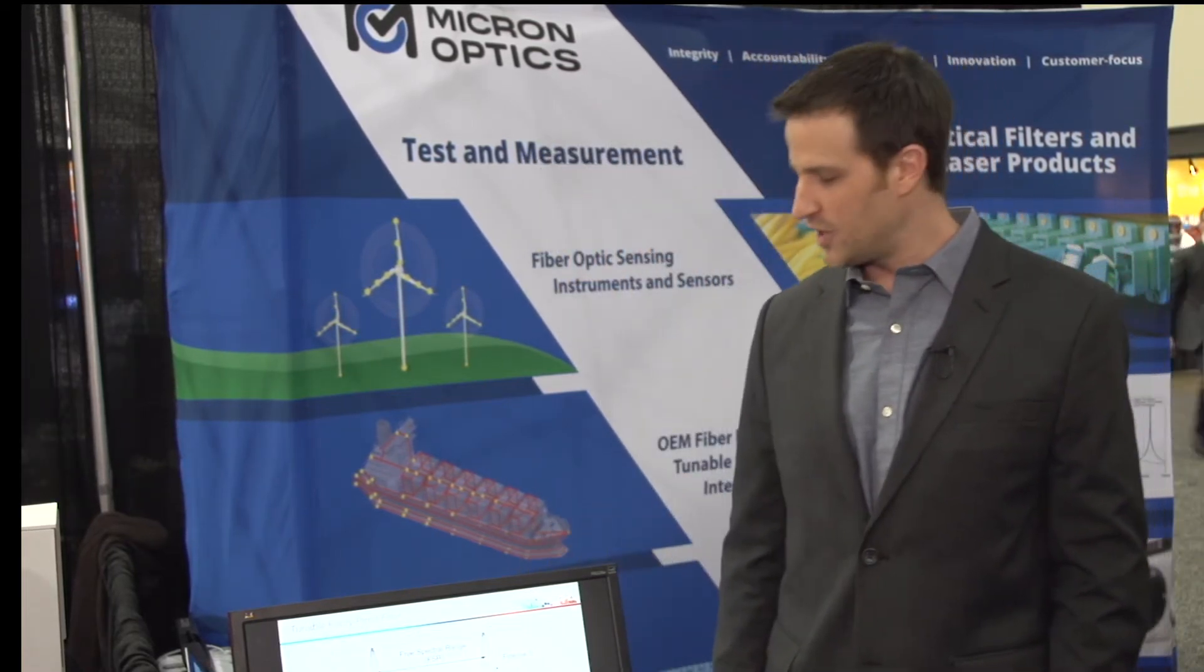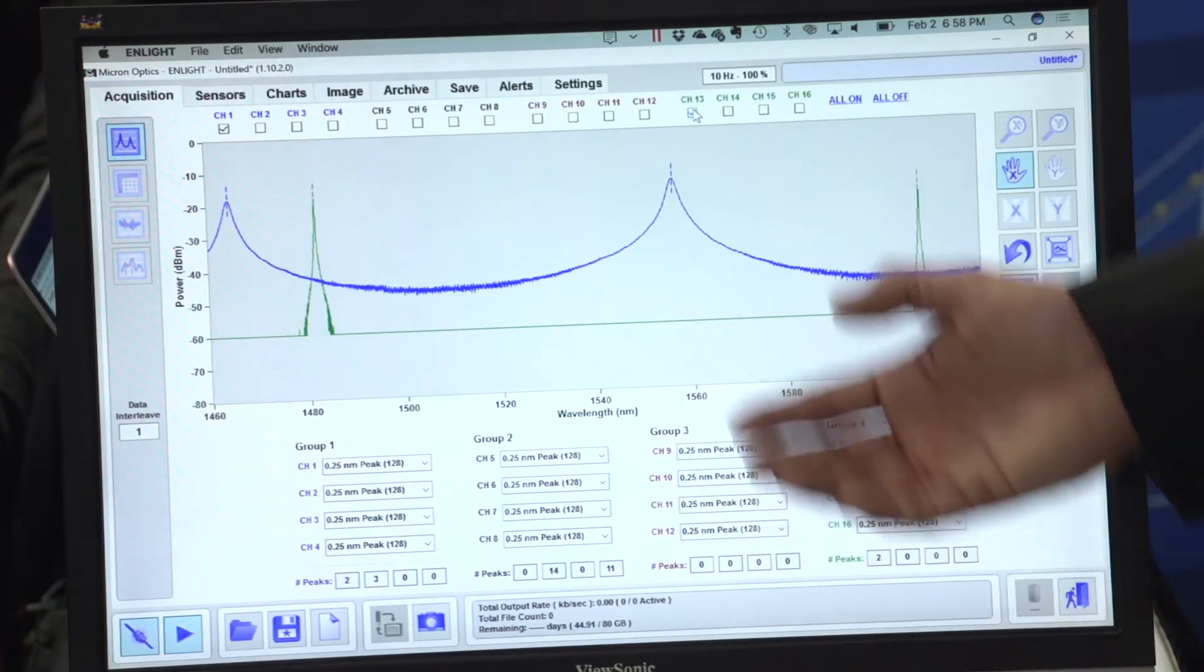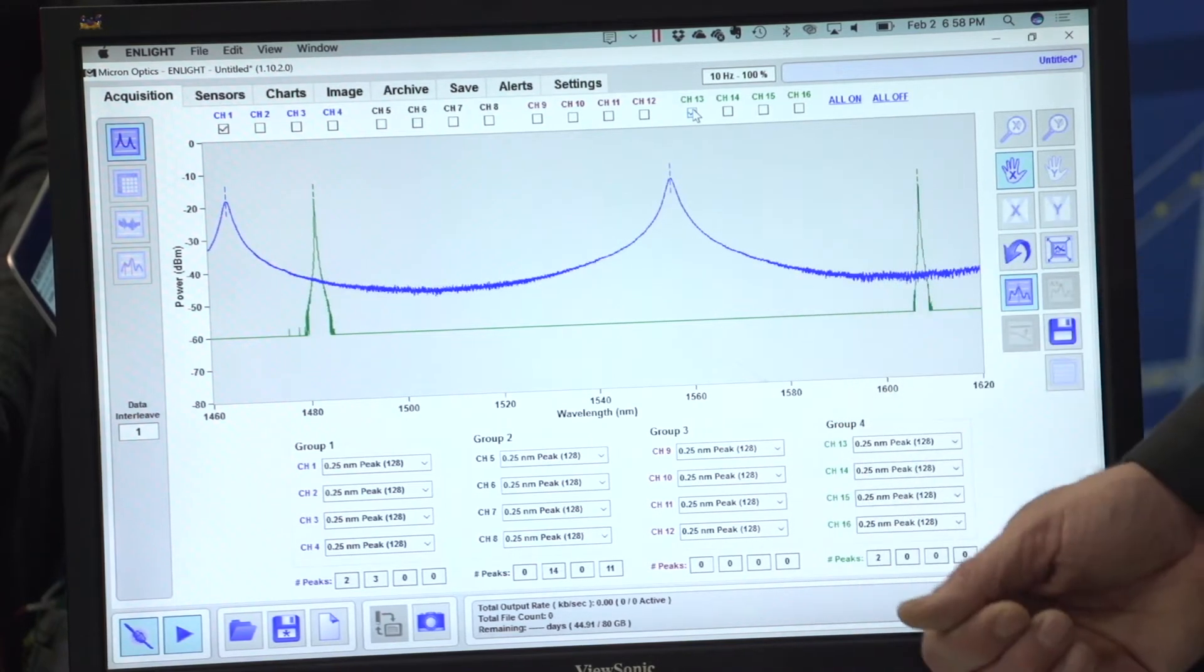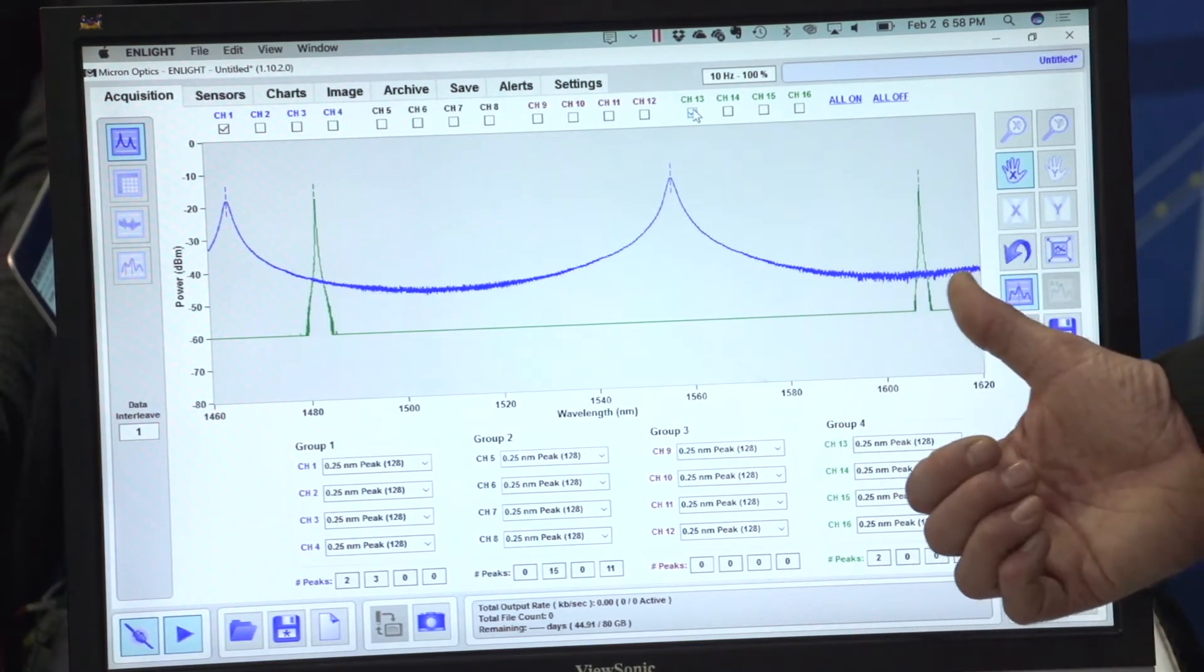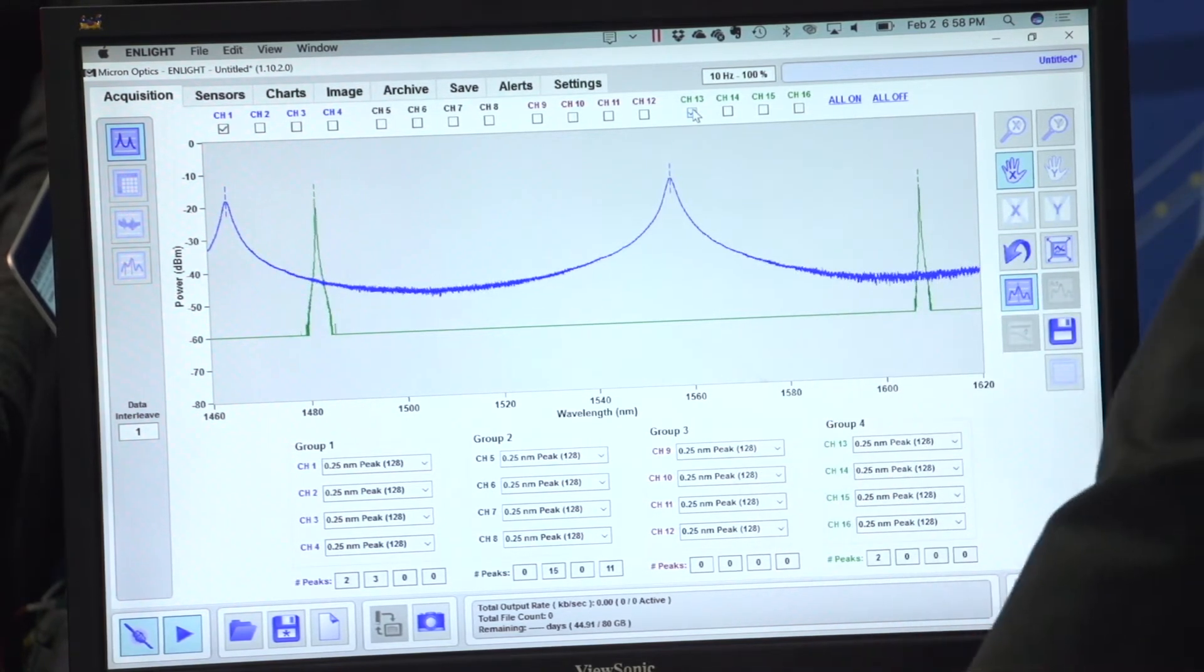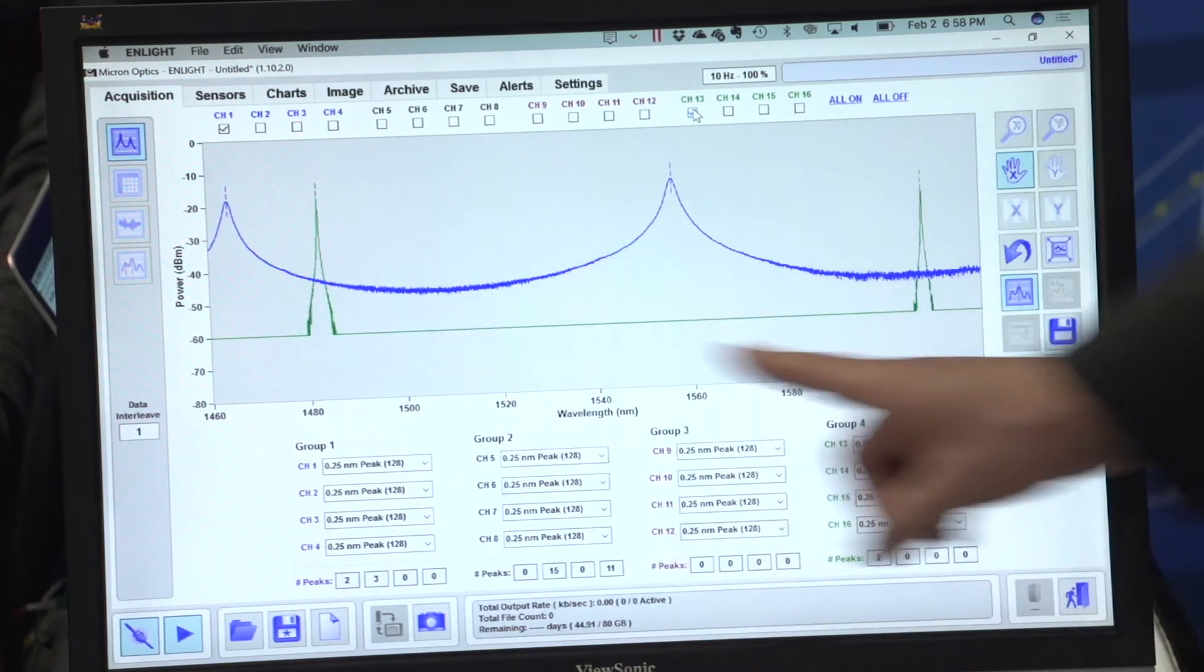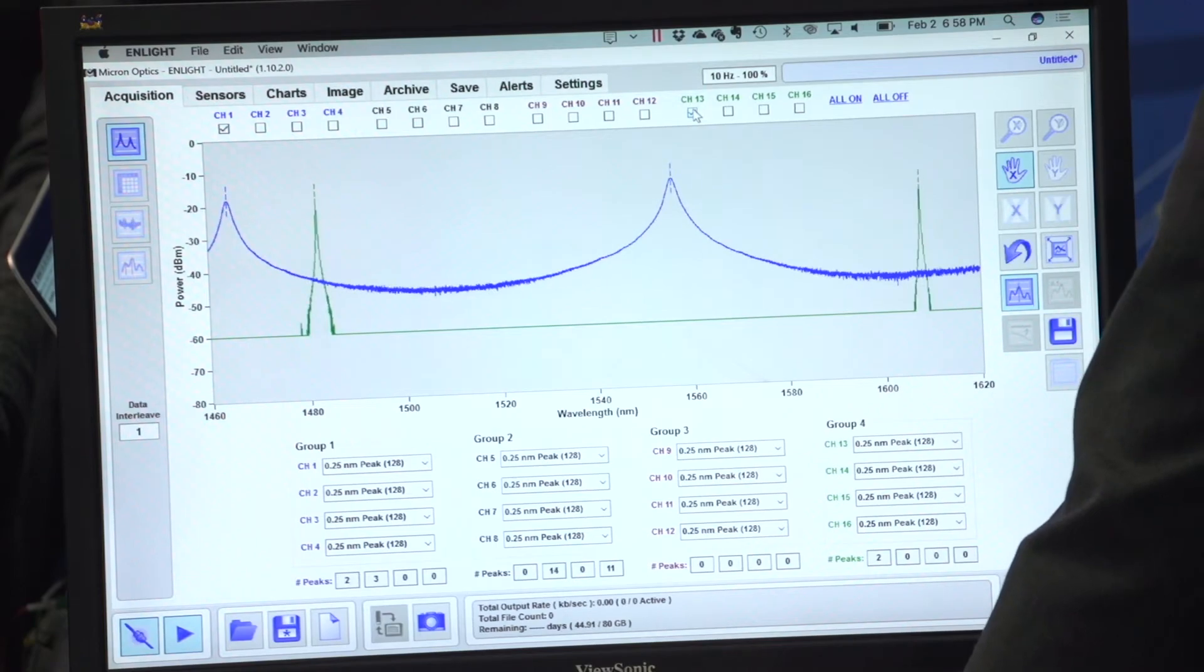The free spectral range can also be seen as the spectral spacing between two adjacent peaks, and the finesse determines the contrast between the peak transmission and the peak rejection wavelengths of the individual filter. The bandwidth is a function of those two and determines how much light is able to pass through the full width half max of each resonant peak.